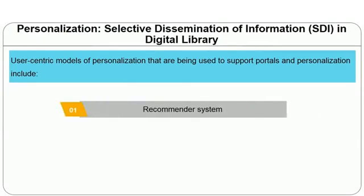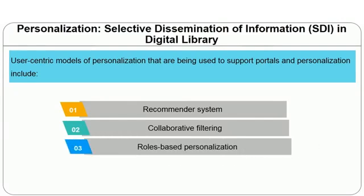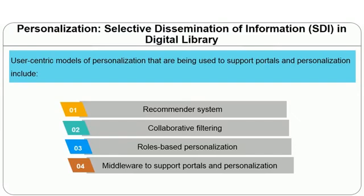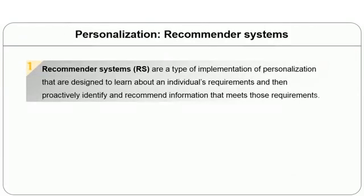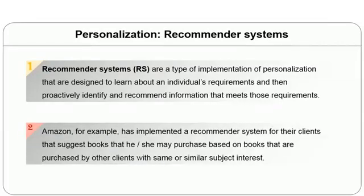Personalization includes recommender systems, collaborative filtering, role-based personalization, and middleware to support portal and personalization. A recommender system is a type of personalization implementation designed to learn about an individual's requirements and proactively identify and recommend information that meets those requirements. Amazon has implemented a recommender system that suggests books a user may be interested in purchasing, based on other clients with similar preferences.